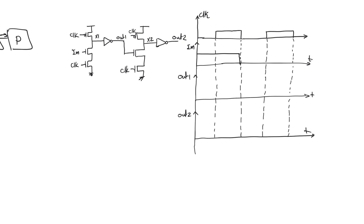We have a first inverter whose input is in-one. We expect to see output-two equal to input-one during the evaluate phase, because that's when logic is evaluated. During the first pre-charge, node X1 is going to pre-charge up to VDD. Node out-one is going to be at zero volts — not at VDD — because X1 is at VDD and out-one is the static inversion of X1.